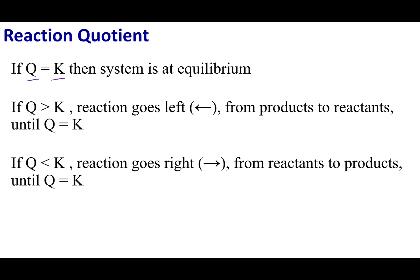Now, let's think about what happens if Q is greater than K. So, remember what Q equals? Q and K both equal products over reactants raised to their stoichiometric coefficient. Now, if Q is larger, meaning it is bigger than my K, well, that means that I have too much products.